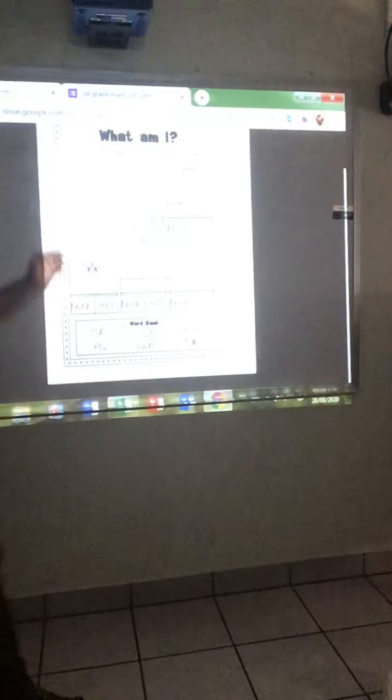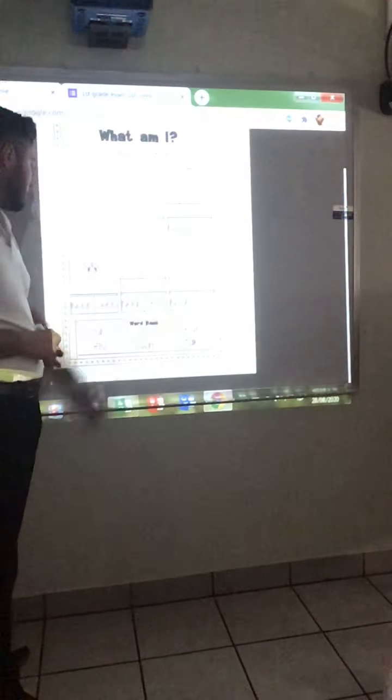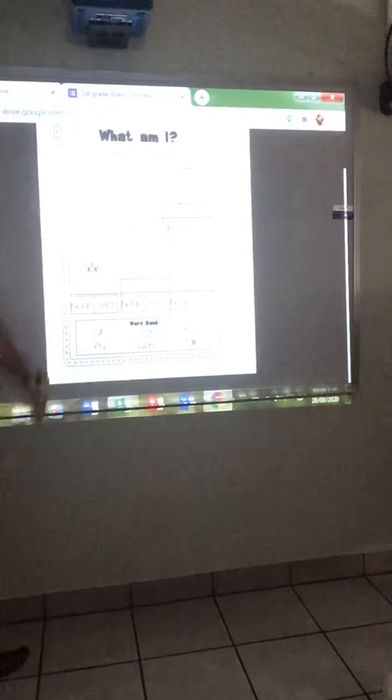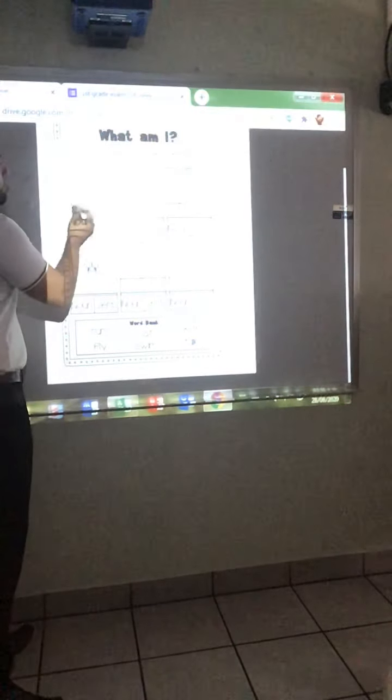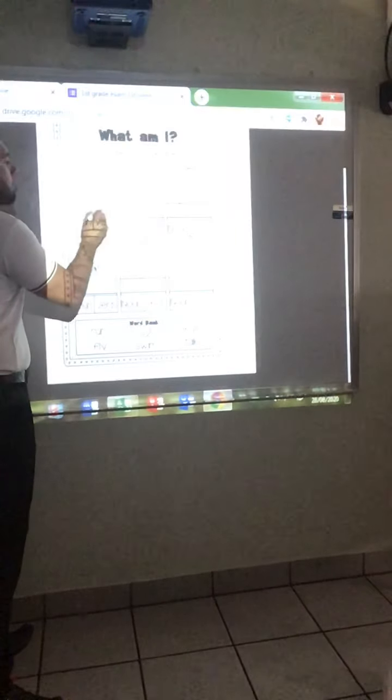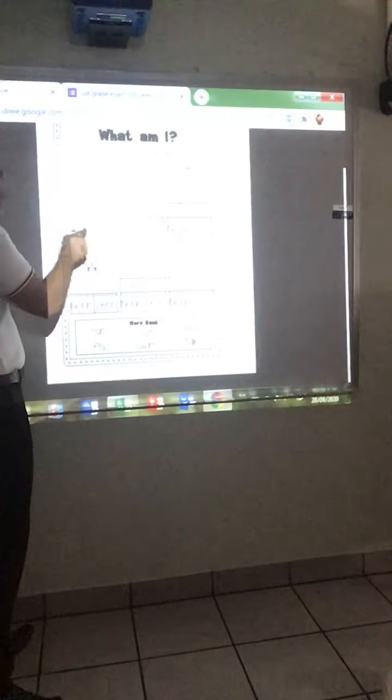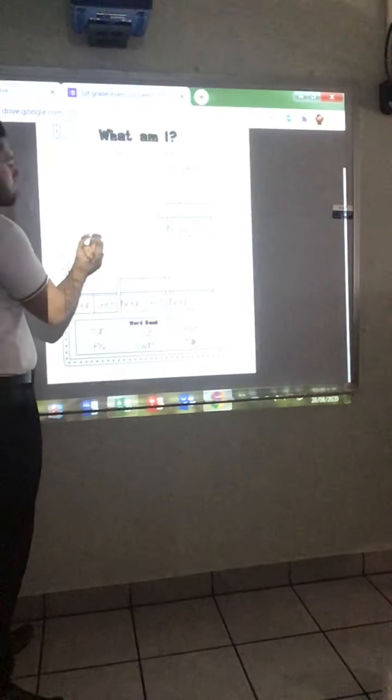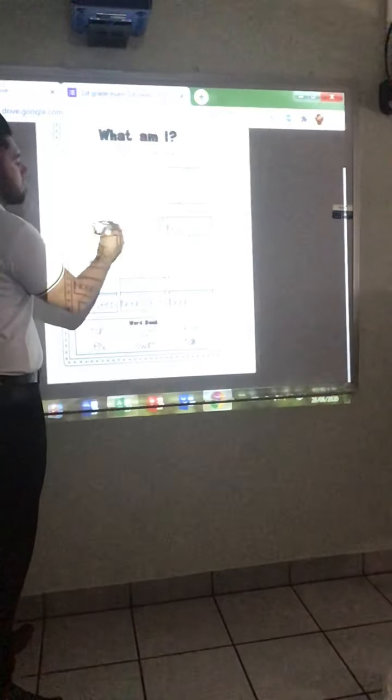They have the word bank. They have run, cat, eat, fly, swim, and talk. For example, the first picture, what do you see? We see swim. They have to write swim and then color if it's a noun or it's a verb.